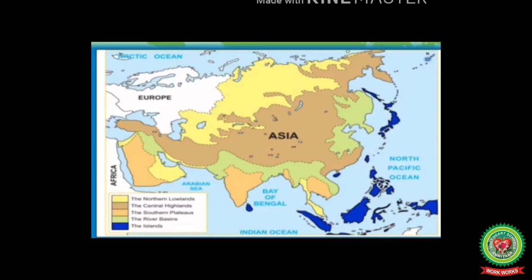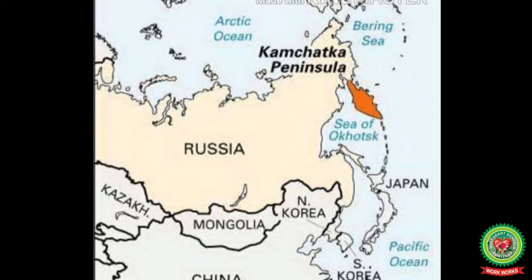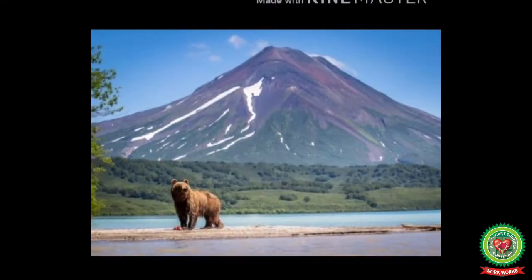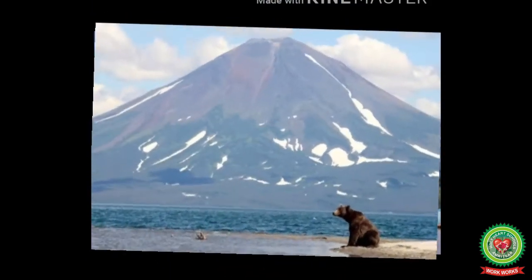Let's discuss them one by one. Number one: the Kamchatka Peninsula. It is a 1,250-kilometer-long peninsula in the Russian Far East with an area of about 270,000 square kilometers. The Pacific Ocean and the Sea of Okhotsk make up the peninsula's eastern and western coastlines respectively. Kamchatka means 'uneven or rough' and it is famous for the abundance and size of its brown bears.